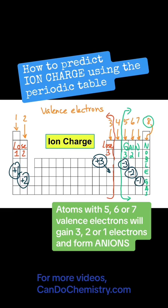So there is your pattern: plus one, two, and three, and then minus three, two, and one. Notice that we skipped this column right here with four valence electrons. Are they going to gain four or lose four? They're going to do something different - they're typically going to share electrons.